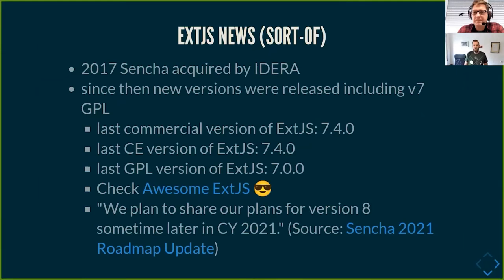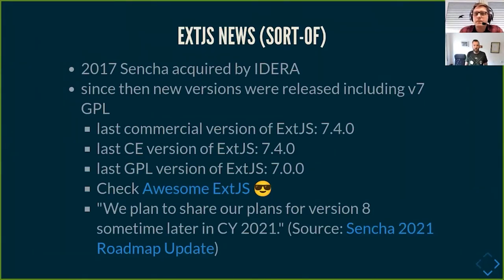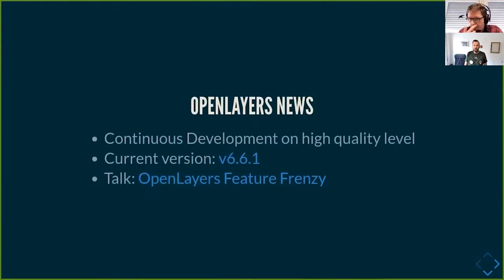The Sencha acquisition brought some uncertainty about the project's future. However, a new major version of ExtJS — version 7 — was released. The current last commercial version is 7.4, the same as the community edition, and the last GPL release is version 7. There are no complete version plans for version 8, which appeared in a roadmap update from Sencha. On the OpenLayers side, continuous development at a very high quality level continues — the current version is 6.6.1, and there's also an OpenLayers talk at this FOSS4G conference.